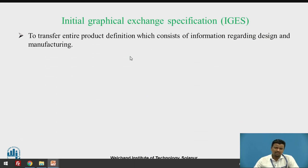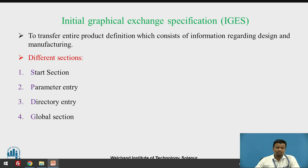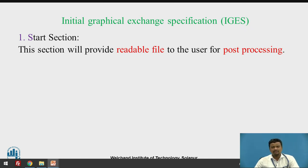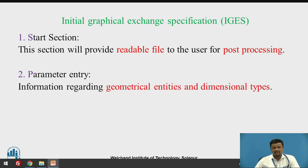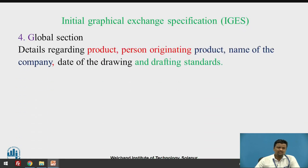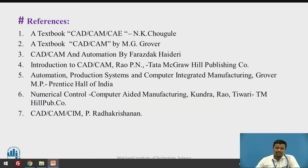Whenever you want to transfer an entire product containing information regarding design and manufacturing, we use IGES. There are different sections in IGES: the Start Section, which provides a readable file for post-processing; the Parameter Entry, which provides geometrical entities and dimensional types; the Directory Entry, which provides rendering properties like color or material; the Global Section, which provides details about the product — who is developing it, the company name, date, and drafting standards; and the Terminate Section, which covers export choices where data can be edited as the file is transferred to another software.